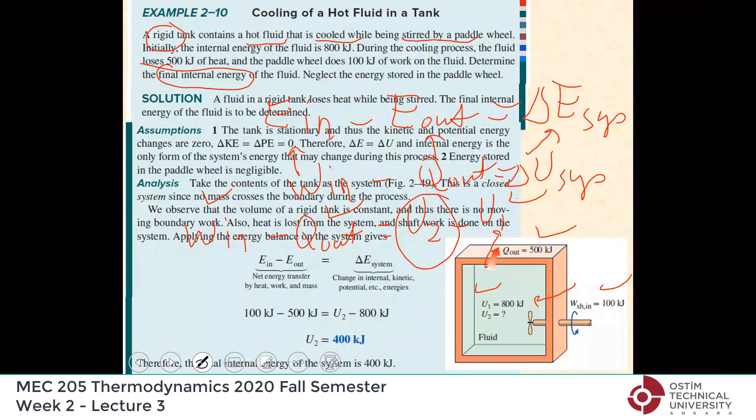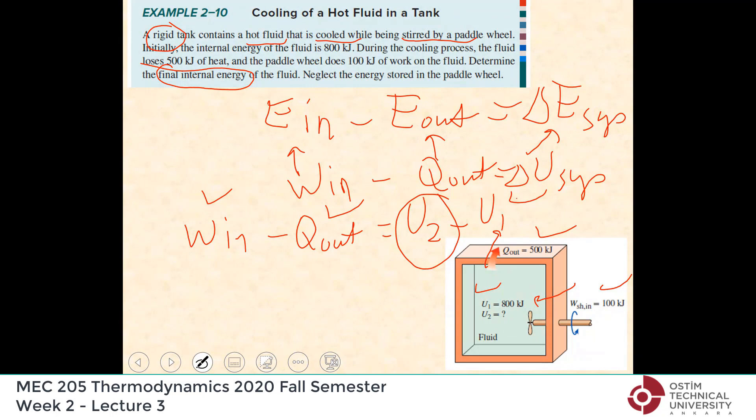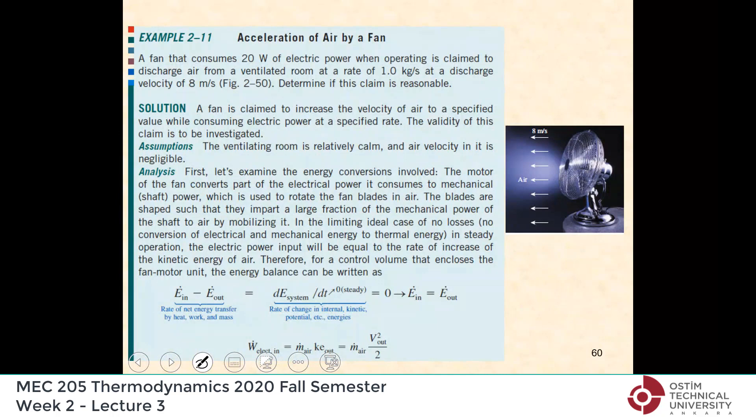This is the methodology to keep in mind — step by step. The basic relation is energy in minus energy out equals ΔE. Then just identify on the system: what is entering, in what form; what is leaving; and what is changing.